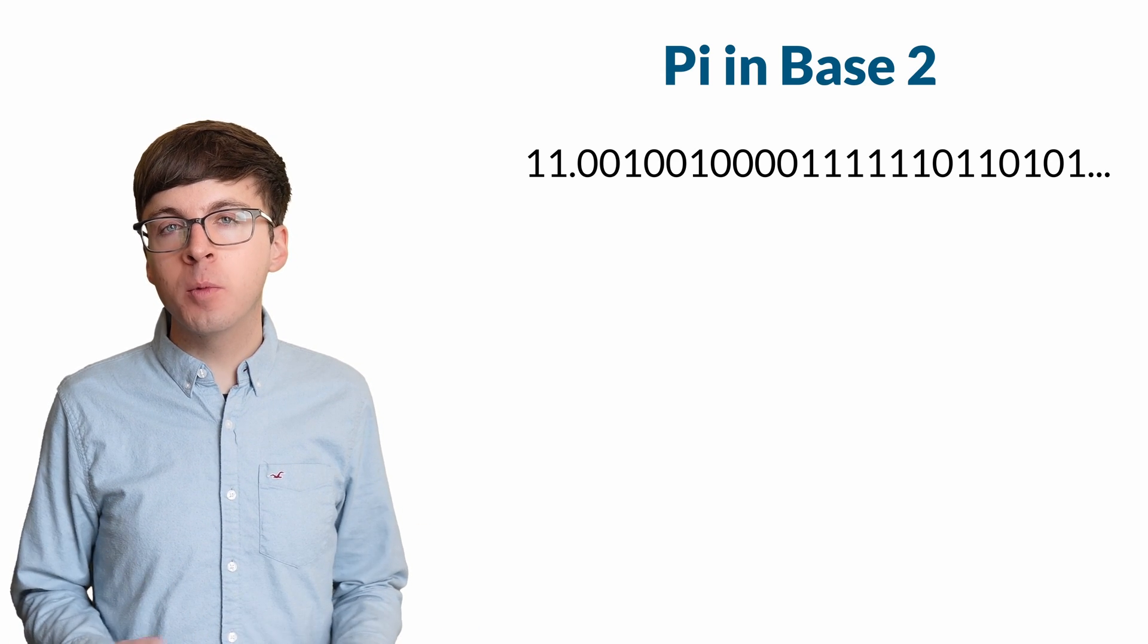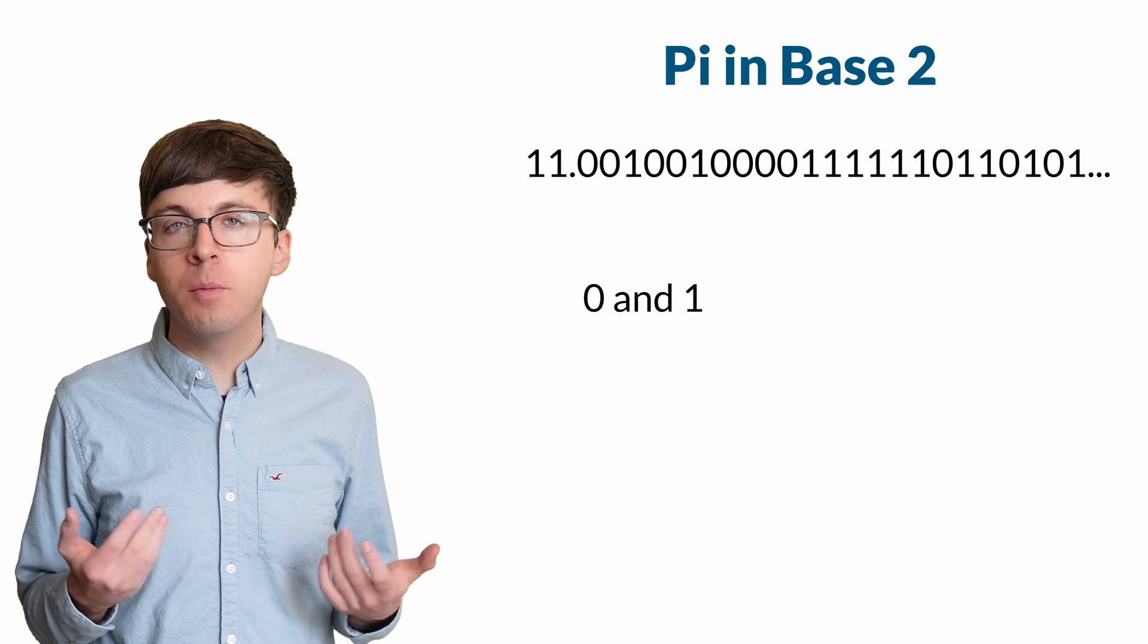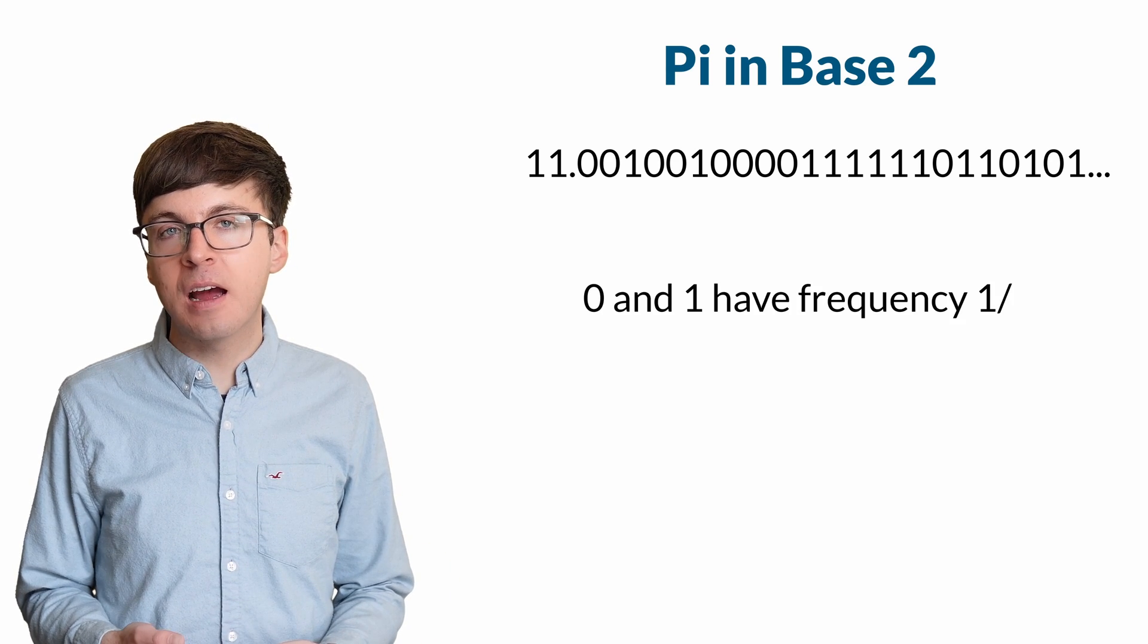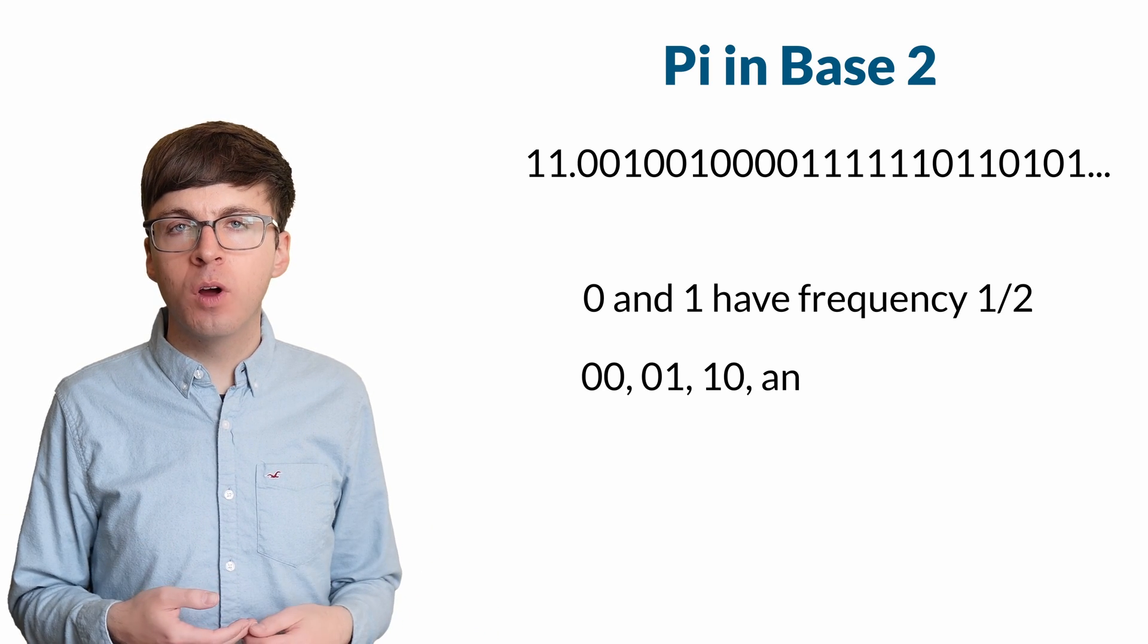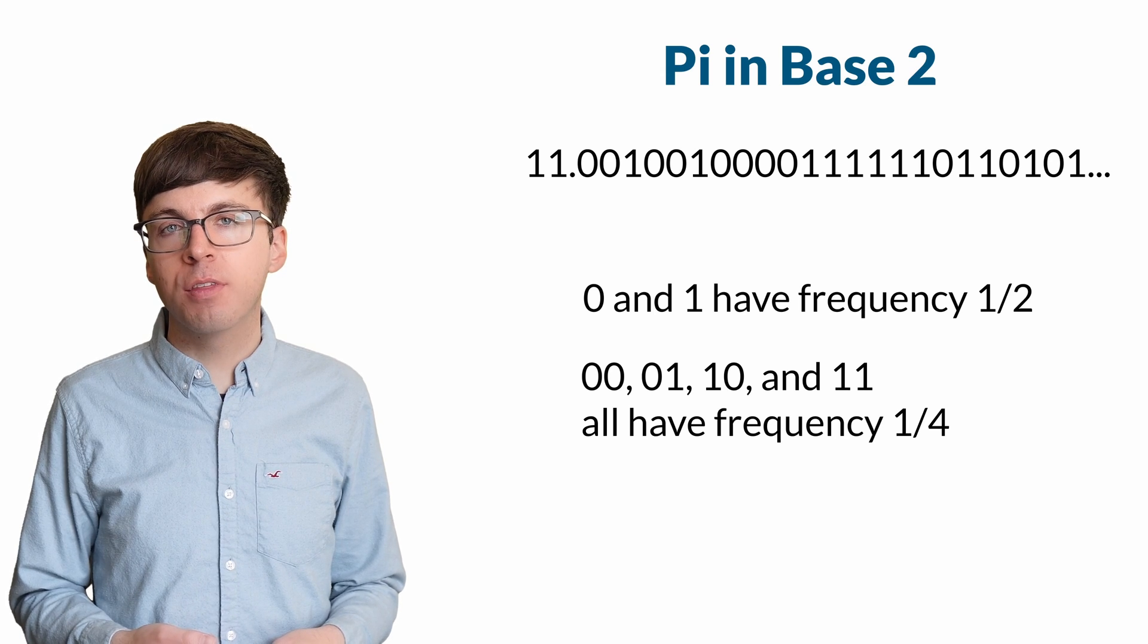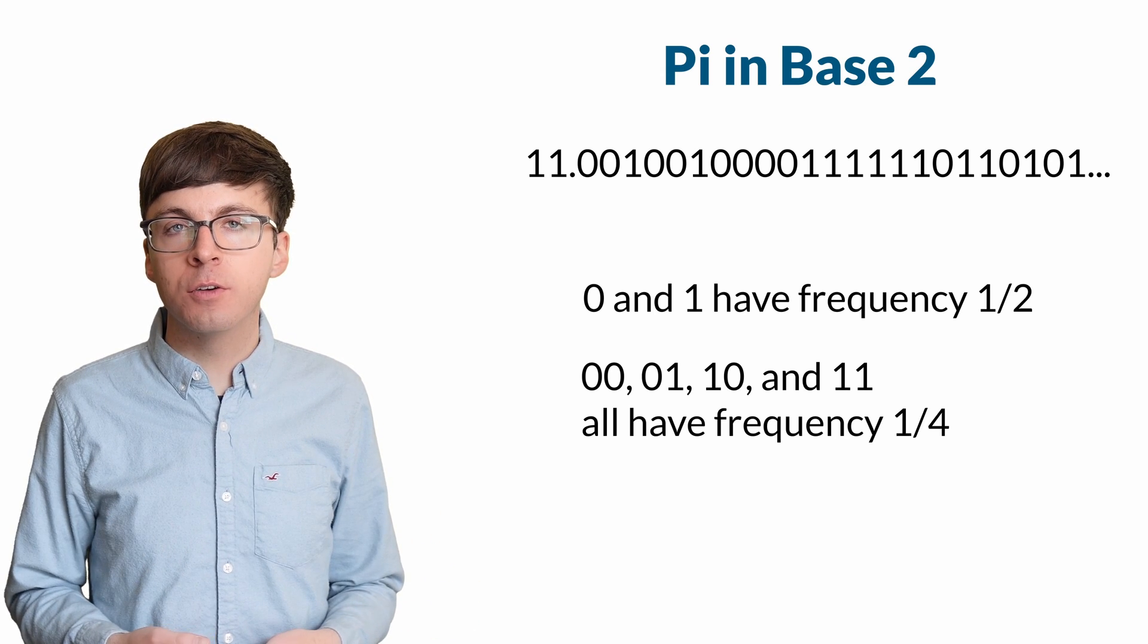For pi to be normal in base 2, we need to check that 0 and 1 both have long-term frequency 1/2. And then we also have to check that 0-0, 0-1, 1-0, and 1-1 each have long-term frequency 1/4, and so on for all the longer sequences.